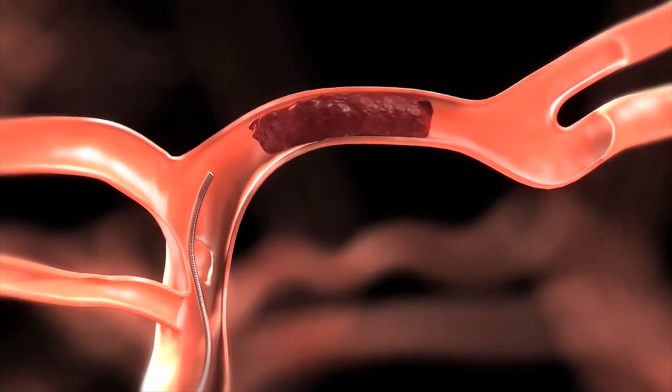We catheterize the arteries inside the brain, the carotid artery, and then into the middle cerebral artery. You can see the clot within the middle cerebral artery, which supplies blood to that half of the brain.